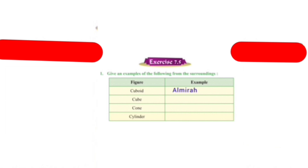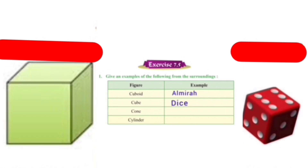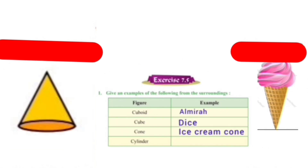The next one is cube. Its example is a dice. We all have seen dice in the Ludo game. This dice is of the shape of a cube. The next one is cone. The example of cone is an ice cream cone. We all have eaten ice cream by putting it into a cone. This cone is of the shape of a cone.